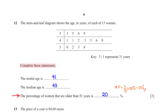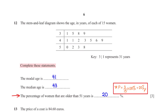The percentage of women that are older than 51 years: from the stem and leaf plot we see that there are three women who are older than 51 years, so the percentage is 3 divided by the total number of women, which is 15, times 100%, which is equal to 20%.